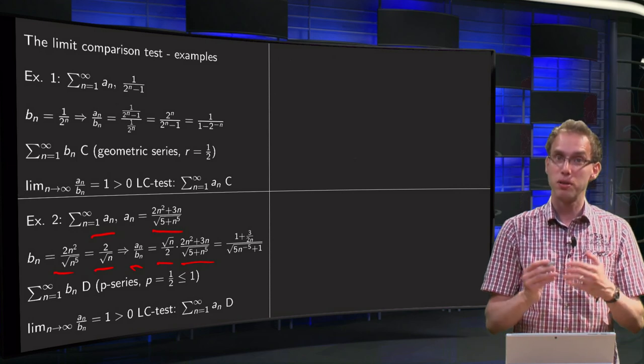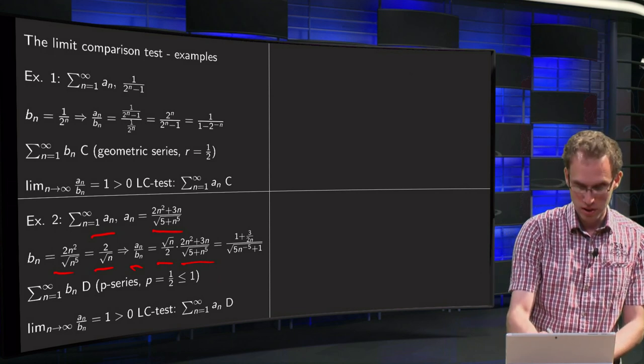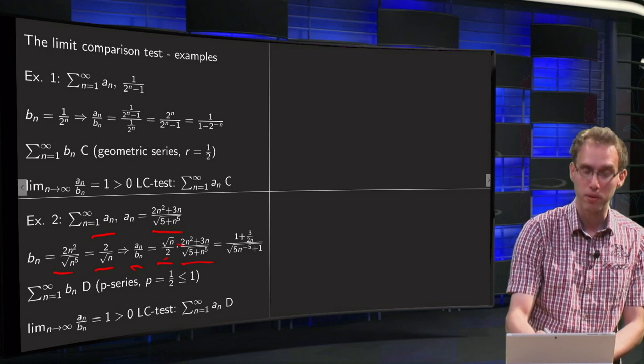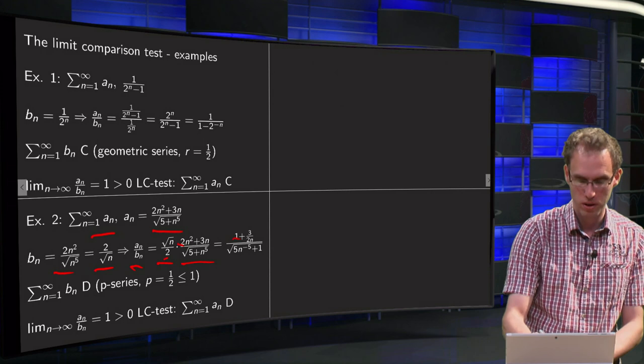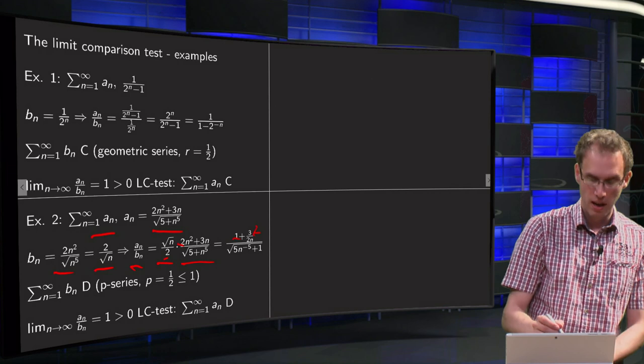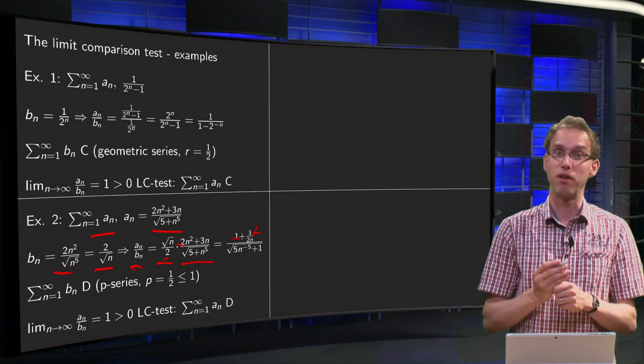And then we can simplify this by dividing by the highest power, which is n to the power 5 over 2. We divide out the 2's here, so n divided by n to the power 5 over 2, we get a 1, here we get a 3 divided by 2n.